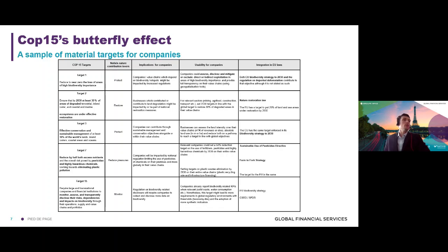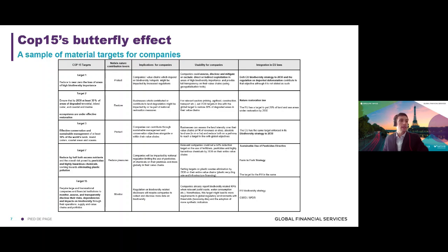One of the most interesting targets is probably Target 19, which is about sustainable finance contributing to financing biodiversity, halting biodiversity loss, and restoring biodiversity. We can see that many of these targets have already been implemented in EU regulation. For example, the nature restoration law already provides that 30% target of degraded areas to be restored by 2030. So most of the targets in the COP15 are actually already in place in EU law.